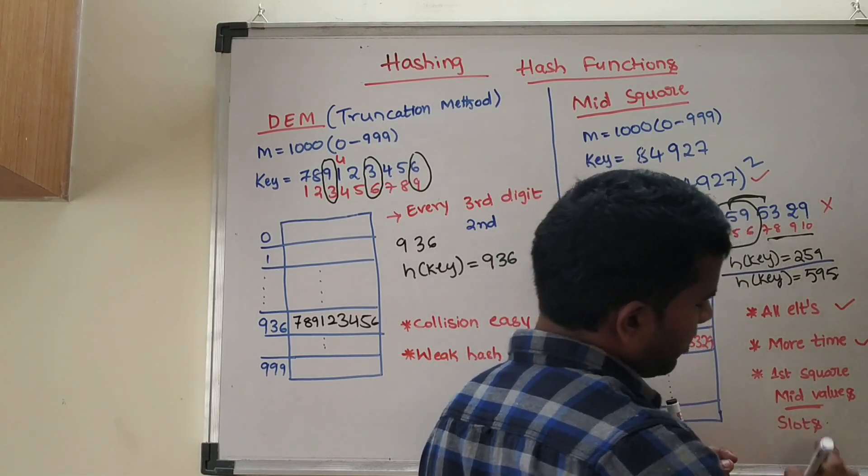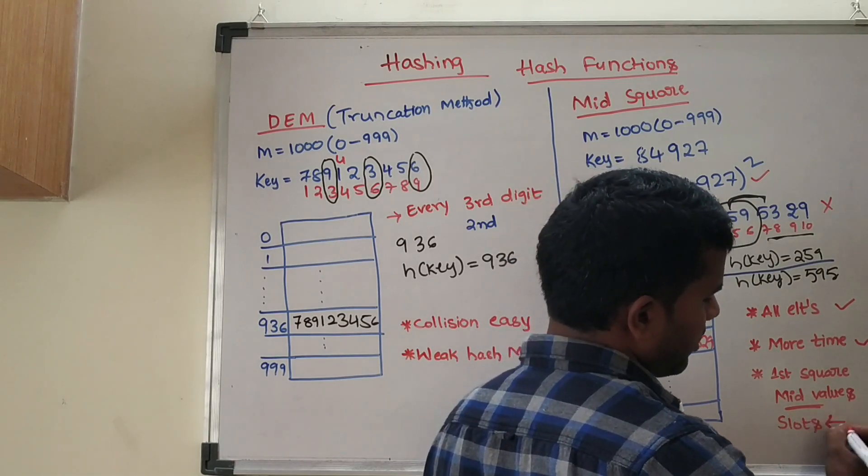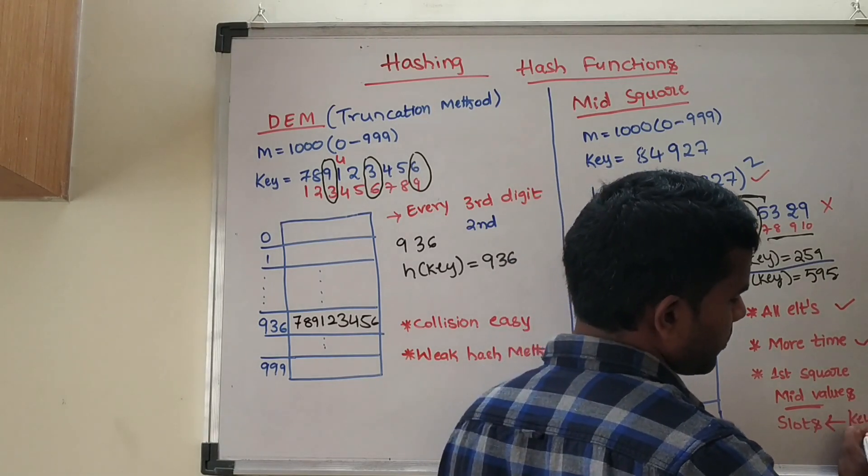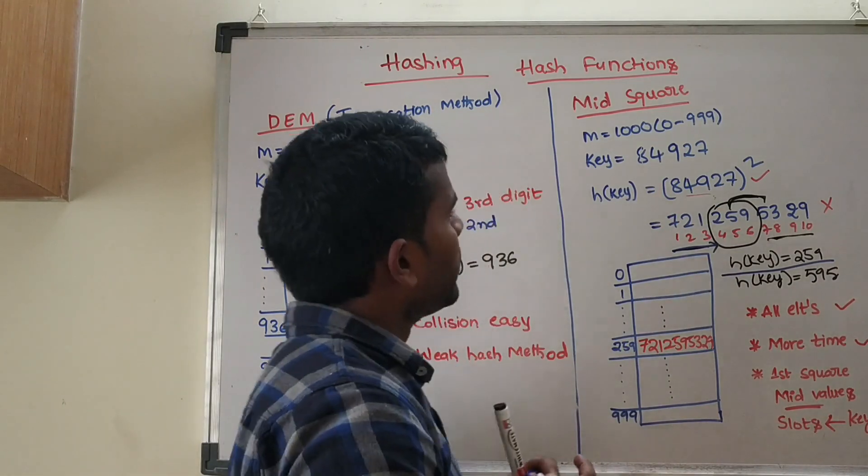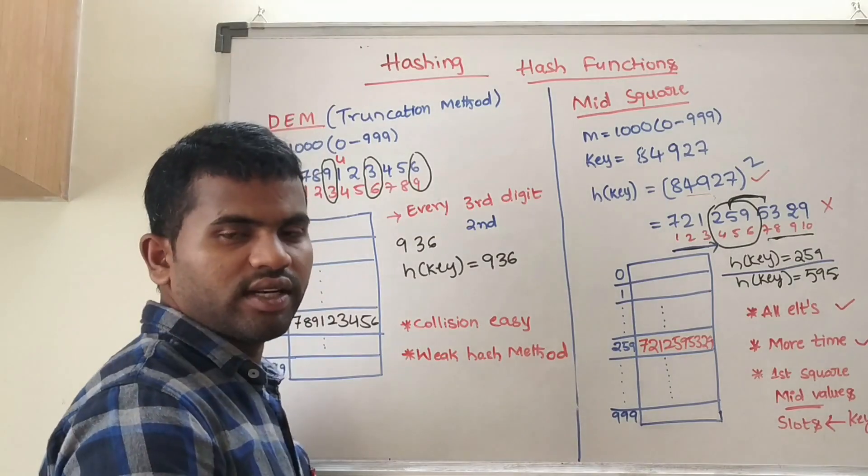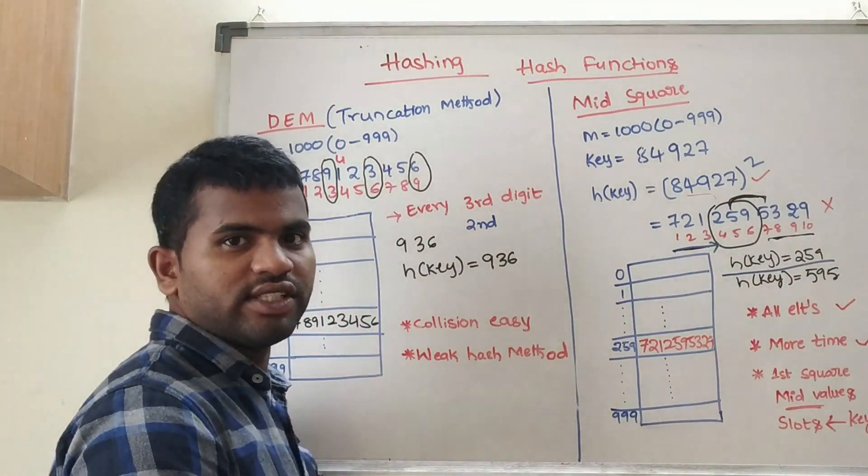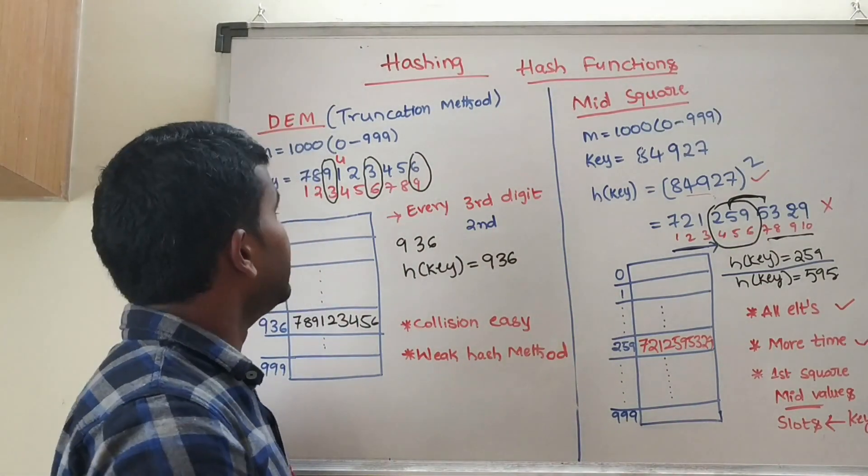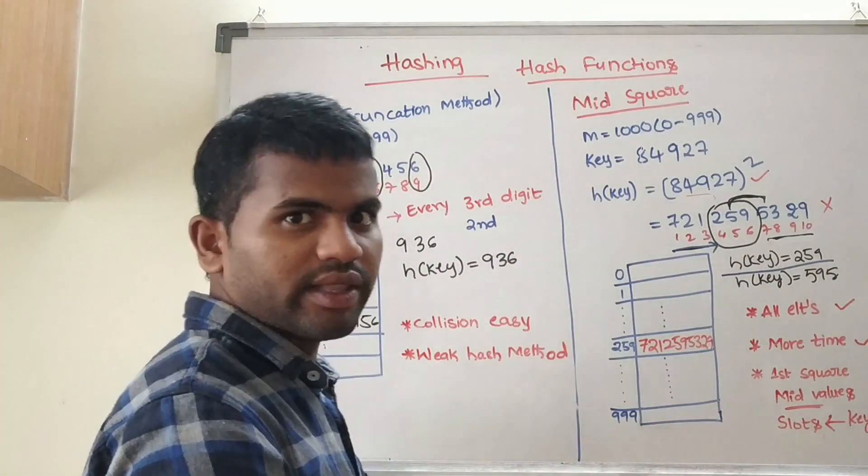So this is the mid square method. We have seen till now division method, digit extraction method, and mid square method. These are very simple methods.